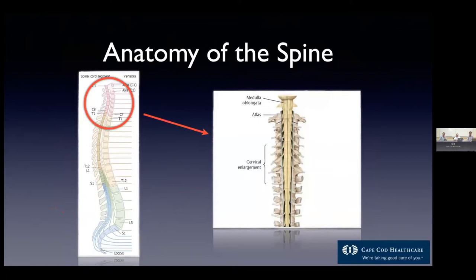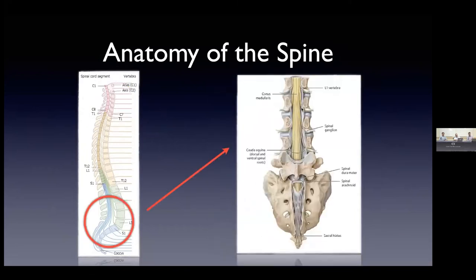Looking down on the cervical spinal cord — a lot of information travels here. Everything that moves your body, whether motor function or sensation, is traveling through this structure on its way to the brain. The diameter is quite small — probably about the thickness of your thumb — so it's very dense in terms of neurological importance. Down in the lumbosacral spine, the cord ends, and what remains really looks like strands of spaghetti floating in spinal fluid.